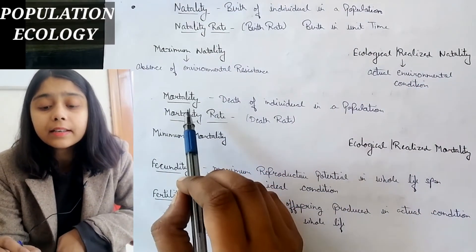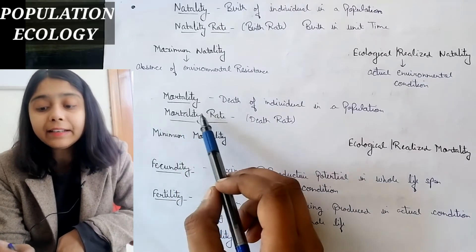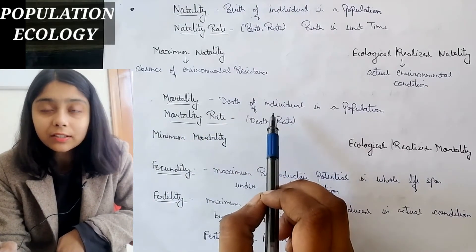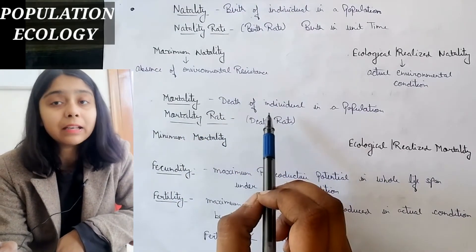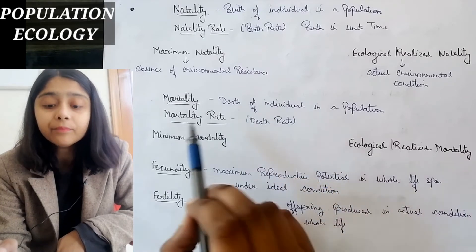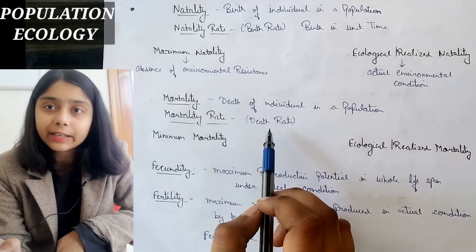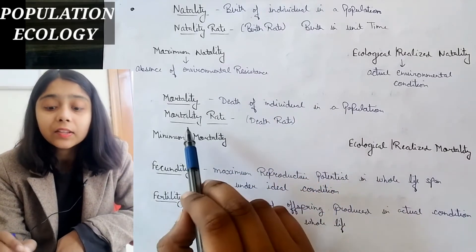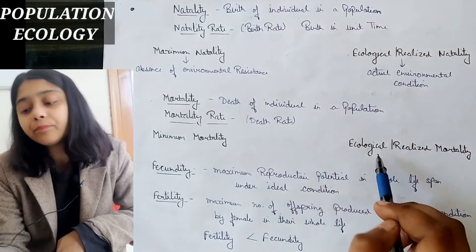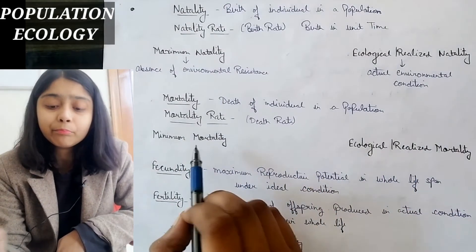Second is mortality. Mortality is the death of individuals in a population. Mortality rate means death rate. There are two types of mortality: minimum mortality and ecological realized mortality.